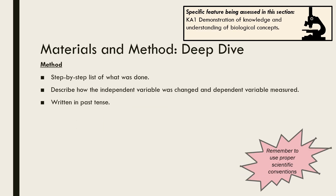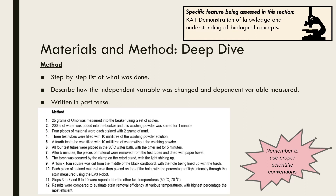Your method is a step-by-step list of what was done and needs to be detailed and specific enough to enable someone else to replicate your investigation exactly. Therefore, include specific quantities here as well. Part of this method is a description of exactly how the independent variable was changed and the dependent variable measured. As you have already completed the investigation at the time of writing, the method needs to be written in past tense. Here is an exemplar method — you can see that each step is concise yet specific and written in past tense.